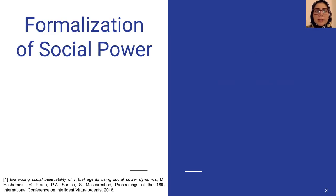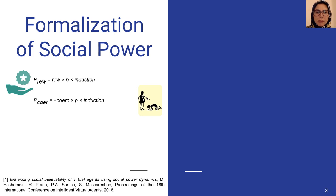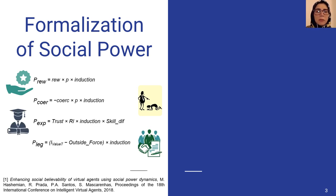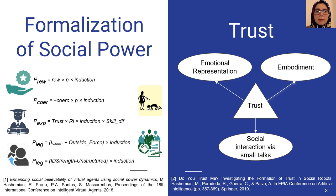To start, we first attempt to conceptualize social power for social agents. In this formalization, we use the model of social power introduced by French and Raven. This formalization revealed one important factor which is common in most of the power bases, and it is trust.